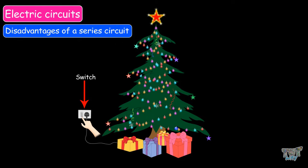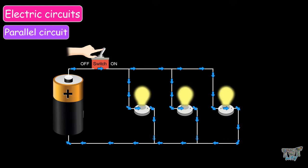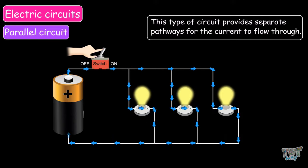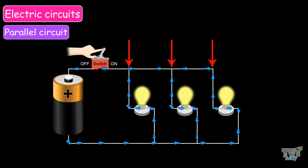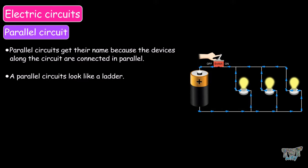Now let's learn about another kind of circuit, which is a parallel circuit. A parallel circuit is a closed circuit in which the current flows through two or more branches at the same time, and then it recombines via a common path to complete the circuit. Parallel circuits connect devices along branch pathways, providing separate pathways for the current to flow through. As you can see in the image, the current has three parallel paths to flow through. Parallel circuits get their name because the devices are connected in parallel, and parallel circuits look like ladders.